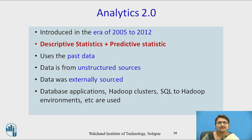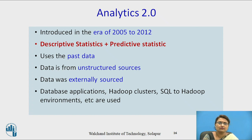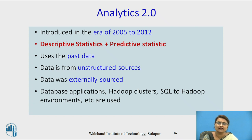Analytics 2.0 covers the era from 2005 to 2012. It is a combination of descriptive and predictive statistics, providing future predictions based on historical data through diagnostic and predictive analysis. The data may be structured or unstructured, and comes from external sources as well as internal ones. Technologies used include Hadoop clusters, SQL, and Hadoop environments.